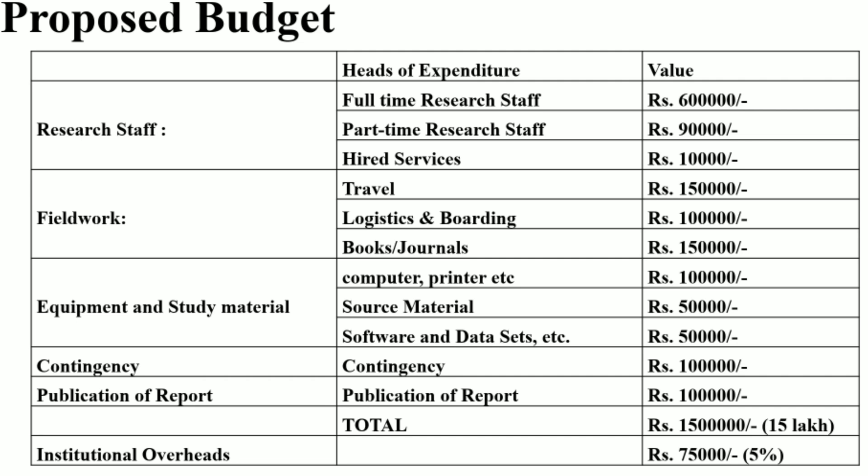Generally, budget items include research staff expenses, field work if any, equipment and study materials, and other contingencies. Sometimes funding authorities place restrictions or capping on funds in certain heads. This head of proposed budget is not applicable to research scholars applying for M.Phil and Ph.D., but if the project is financed by any funding authority, you should include and justify why that much funding is needed for your particular study.